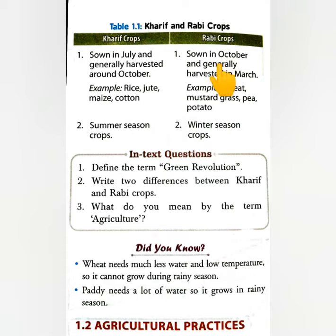Next are Rabi crops, sown in October and generally harvested in March. For example, wheat, mustard, grass, peas, and potato. Kharif crops are summer season crops and Rabi crops are winter season crops.